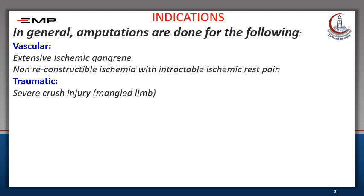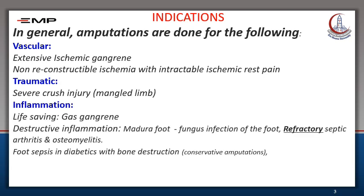The second group of patients who will need amputation are those with extensive trauma. Severe crush injury — what we call a mangled limb — is an indication for amputation. I'm going to show you a picture of a mangled limb later on. Sometimes we do amputation for an inflammatory indication; the classical example is amputation for gas gangrene, which is life-saving.